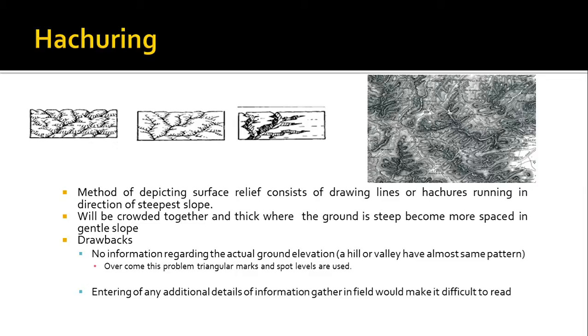And to overcome this thing, what they tried is they use triangular marks in which they can show the spot height. They can draw a small triangle here and mention the actual elevation of that particular point. There is also another drawback: you cannot enter any additional information on that, and even if you enter any additional information, that is very difficult to read.